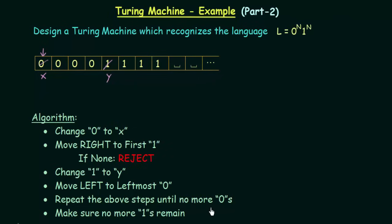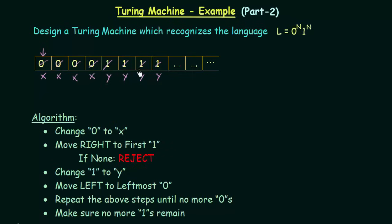The algorithm says to repeat the above steps until no more zeros are found. When I find the next zero, I replace it with X. Then I move right to the first one — this time the first Y is skipped, so the first one is the next symbol. I replace it with Y. Again I move left, find the leftmost zero, replace it with X, move right, replace the next one with Y. I continue this process, replacing each zero with X and each corresponding one with Y, until all zeros are consumed and all ones are consumed. Our tape now looks like XXXXYYYY.